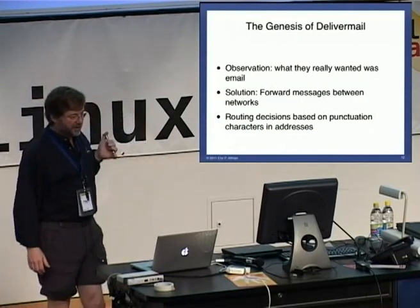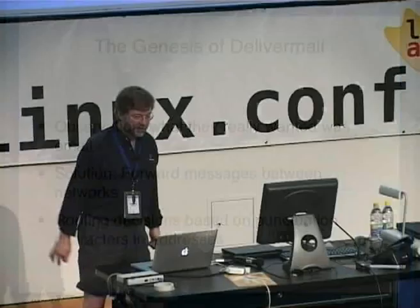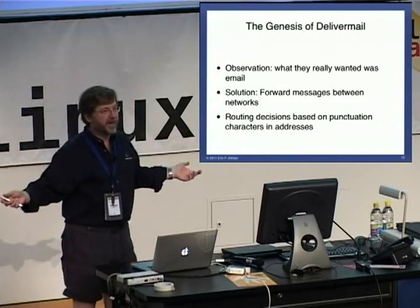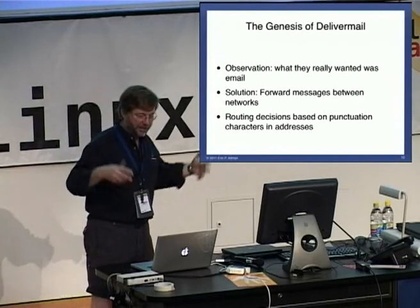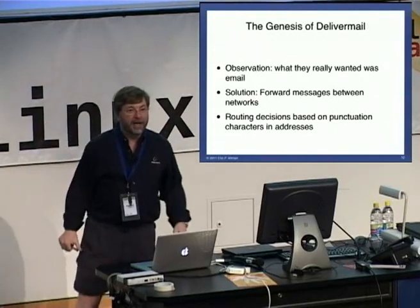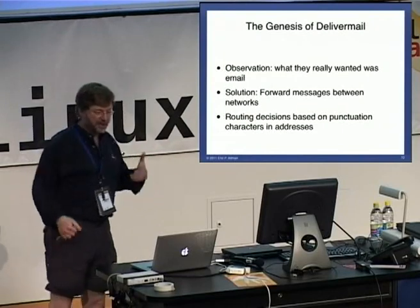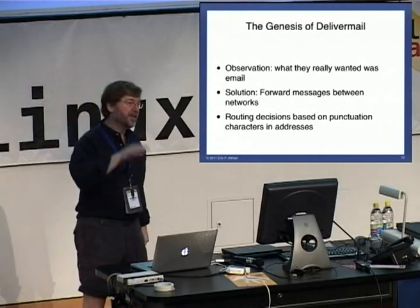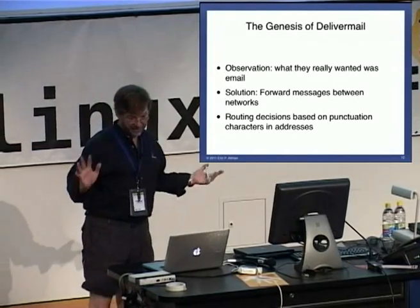So this is the genesis of the program called DeliverMail. I observed that they didn't really want access to the ARPANET — they didn't want telnet, they didn't want FTP. They wanted email. That was the killer app. We had a network that connected the Ingress machine that had the ARPANET connection and the VAXes that they were on. It's software — I can write software to glue software to software. How hard can this be? Just forward it. And for the routing, conveniently, everything used different characters: colons for BerkNet and at-sign for ARPANET. So I could just key off the characters and it would be pretty easy. I spent a lot of time trying to figure out how to write it, couldn't figure out how to do it. And then one day I sat down and just started writing code, and as soon as I did that, everything became clear.